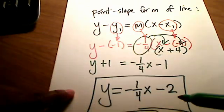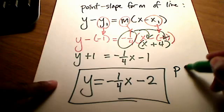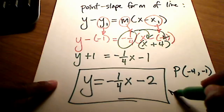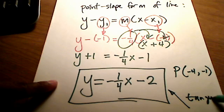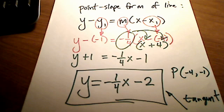That is the equation of the line that touches at point P of negative 4 comma negative 1. That is the equation of the tangent line at that given point. Hope that helps.